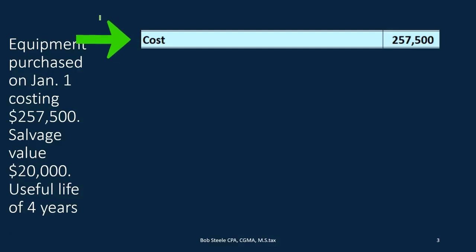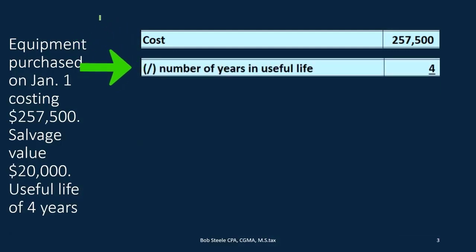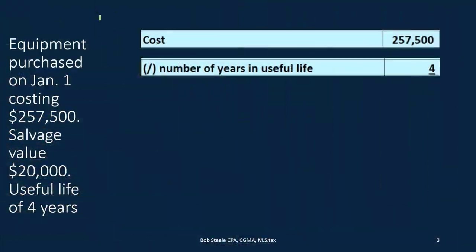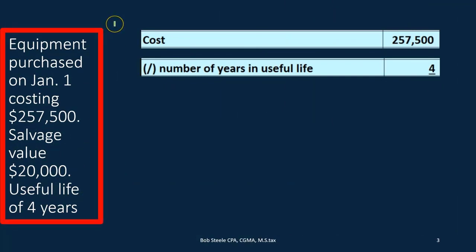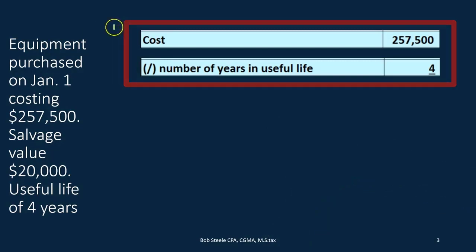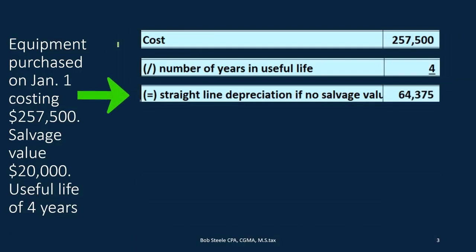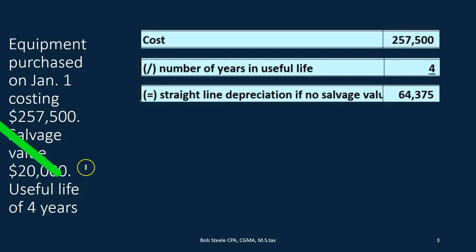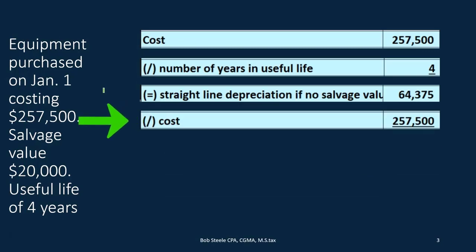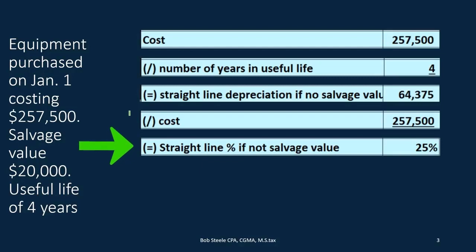For the double declining method, we first find the straight-line depreciation rate without considering salvage value. We take the cost divided by the number of years in the useful life — for example, $257,500 divided by 4 years — then divide that result by the cost. This gives us the straight-line percentage, which we then divide that by the cost to get 25%, the rate that would depreciate the asset to zero with no salvage value.